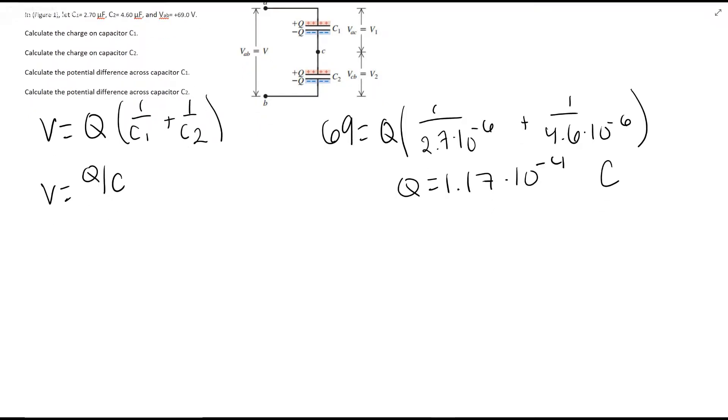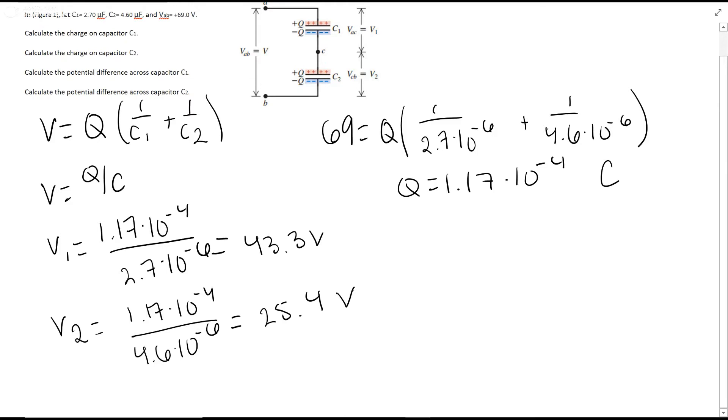So for V1, you have Q1 which we just found, 1.17 times 10 to the negative 4th, over C1 which is 2.7 times 10 to the negative 6, giving you 43.3 volts. For V2, you have the same charge but a different capacitance, giving a smaller voltage of 25.4 volts.